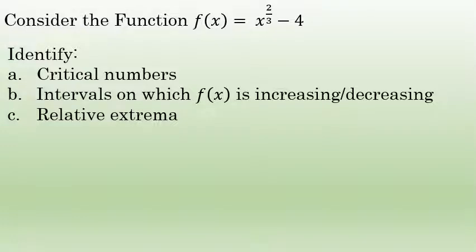In this problem we're given a function f(x) = x^(2/3) - 4 and we are asked to identify the critical numbers, the intervals where the graph of f(x) is increasing and decreasing, and then we'll use that information to identify any relative extrema — any relative maximum or relative minimum values that might occur in the graph of f(x) = x^(2/3) - 4.